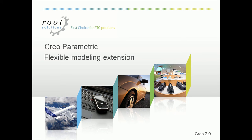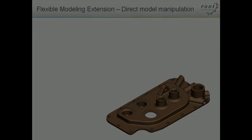Hello, welcome to the Root Solutions Demonstration for Creo Parametric Flexible Modeling Extension. Flexible Modeling is an extension to Creo Parametric that allows users to make modifications to their parts working directly on the geometry. Traditional methods of editing parts involve things like features, dimensions, the part history, or the design intent. Flexible Modeling adds powerful new direct capabilities that allow the user much more flexibility and capability in this editing process.